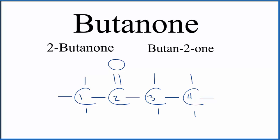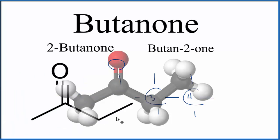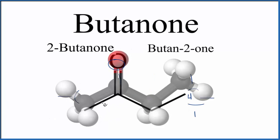Let's look at that in three dimensions. Here's our four-carbon chain. We have the double bond on this carbon here, and then we have a carbon on either side of it — that's what makes it a ketone. This is what it would look like in three dimensions. Sometimes it'll be abbreviated in this form, where we don't write the hydrogens, just the carbons. That would be another way to write the structure for butanone.